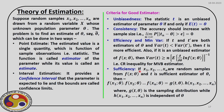Finally, sufficiency: if x1, x2 up to xn are random samples, then t is a sufficient estimator of theta provided we can express the product of all the individual PDFs f(x1|theta)·f(x2|theta)···f(xn|theta) as g(t|theta)·h(x1, x2, …, xn), where g(t|theta) is a sampling distribution and h(x1, …, xn) is independent of theta. If we can express it this way, then we call t a sufficient estimator of theta.